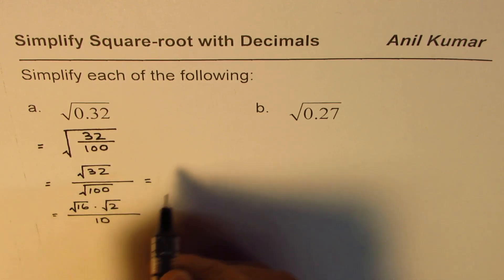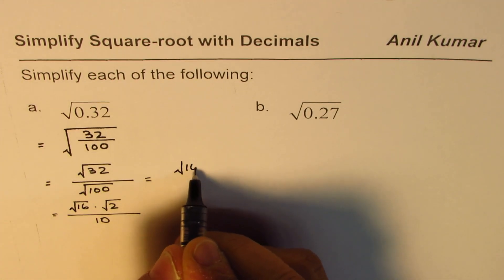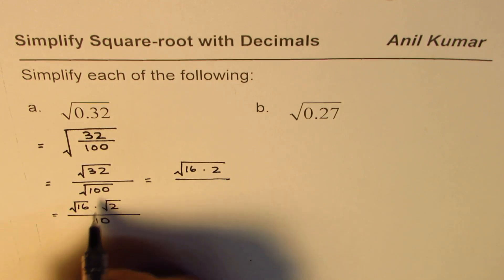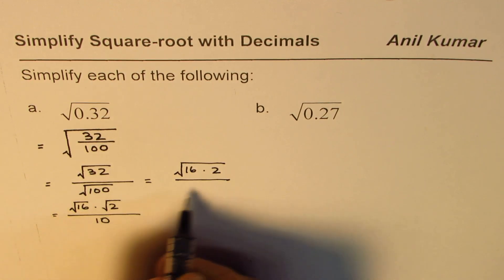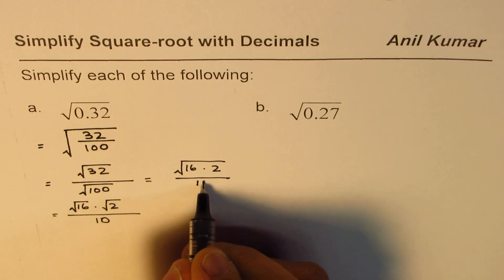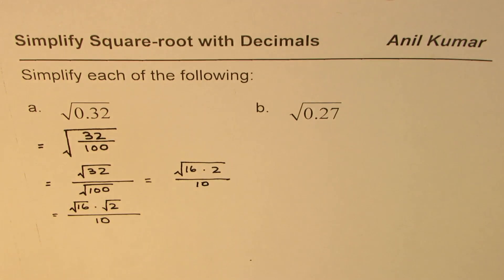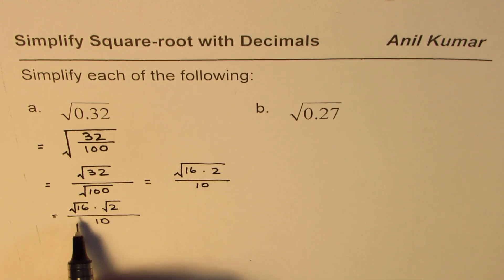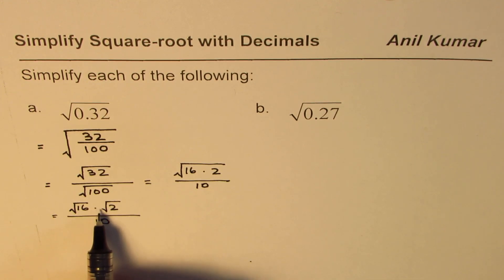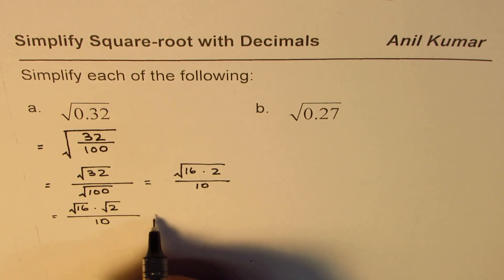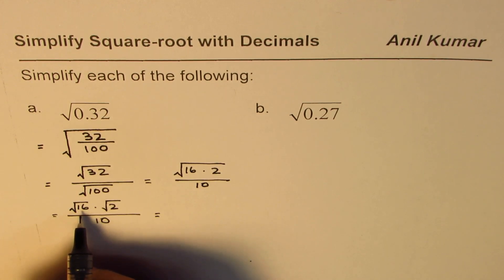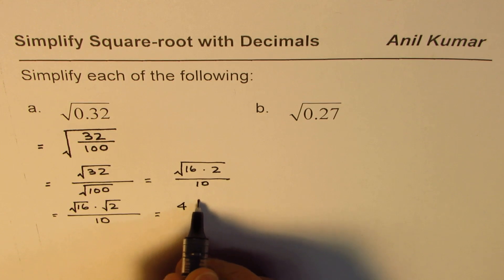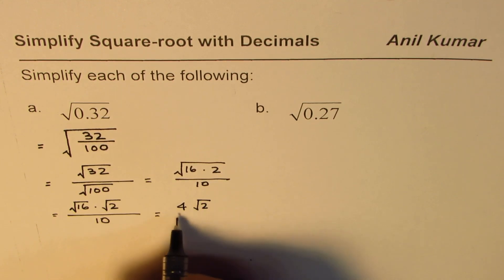So square root of 32 is written as square root of 16 times 2, and the denominator is square root of 100, which equals 10. Applying the product rule, this becomes square root of 16 times square root of 2. Square root of 16 is 4, so we can write this as 4√2 over 10.